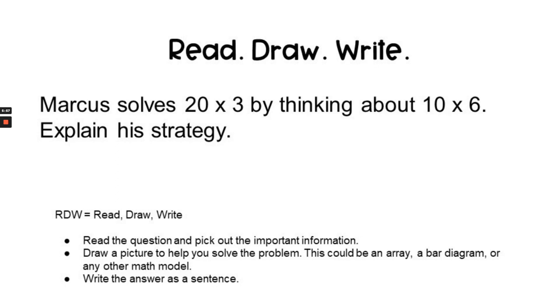The question says, Marcus solves 20 times 3 by thinking about 10 times 6. Explain his strategy.